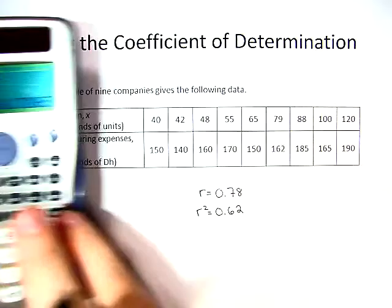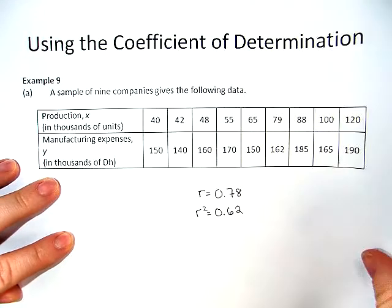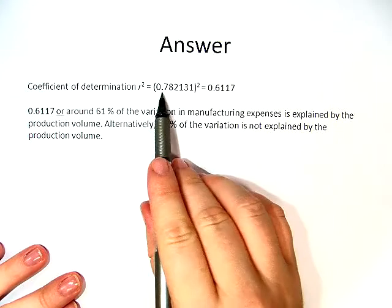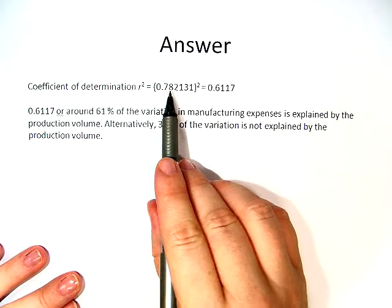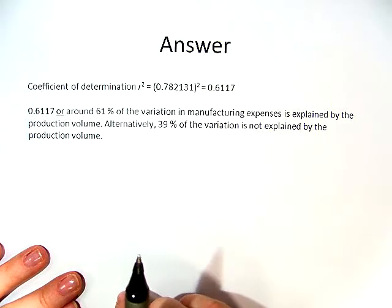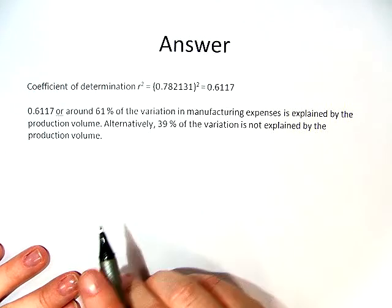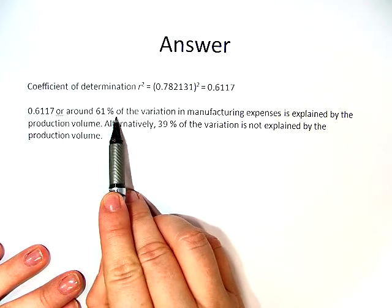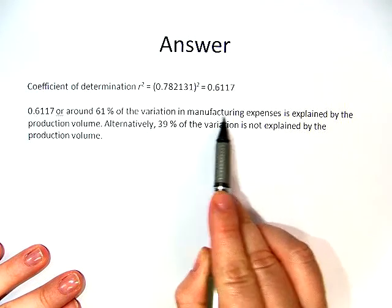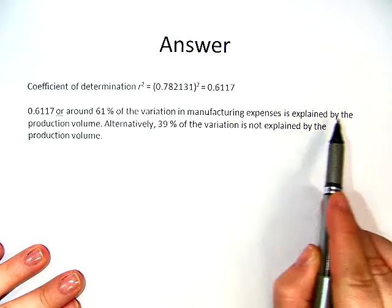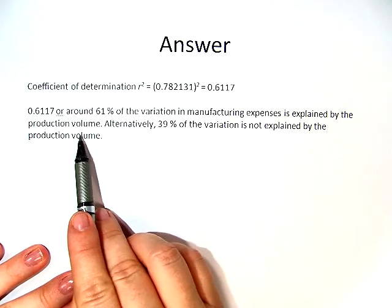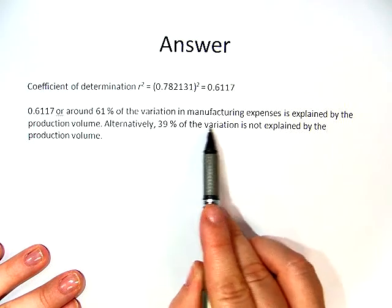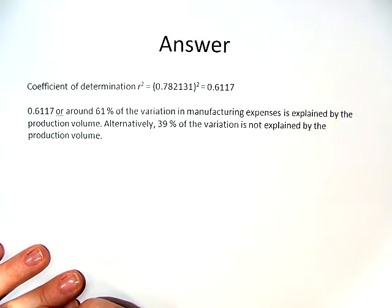So this is a strong correlation with a good fit. But we are not done. You can see here how r, 0.78, we squared and got 0.6117 or 0.62. What this means is 61% of the variation in manufacturing expenses is explained by the production volume. Alternatively, 39% of the variation is not explained by the production volume.